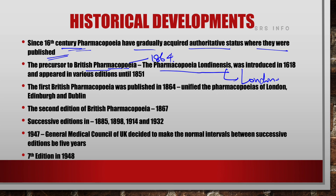The precursor was published in 1618. In 1618, the Pharmacopoeia Londonensis, or the London City Pharmacopoeia, was published and it appeared in various editions until 1851. In 1864, the city Pharmacopoeias of London, Edinburgh and Dublin — all these cities had their own city Pharmacopoeias — were united, and the British Pharmacopoeia was published by compiling these city Pharmacopoeias.